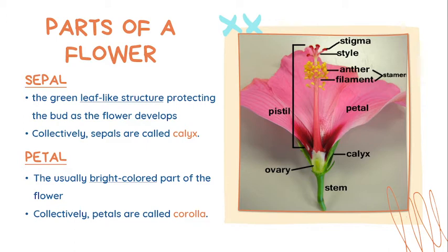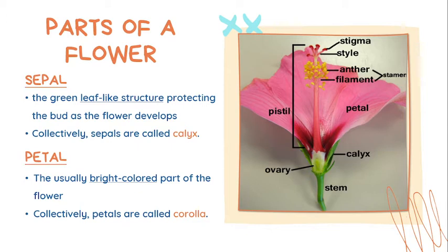Let's start with the first part, the sepal. It is the green, leaf-like structure protecting the bud as the flower develops. From the picture, you cannot see the word sepal because the collective term for the sepals is called calyx — that's at the bottom part of the flower, the green one. Next up, we have the petal. Petals are usually the brightly colored parts of the flower. For this example, the petals are in pink. They are in bright colors to attract pollinators, and collectively, petals are called corolla.